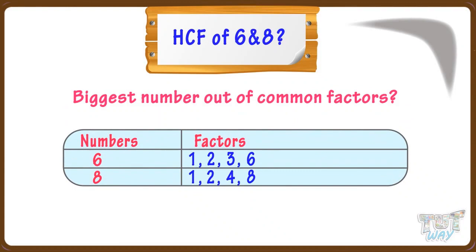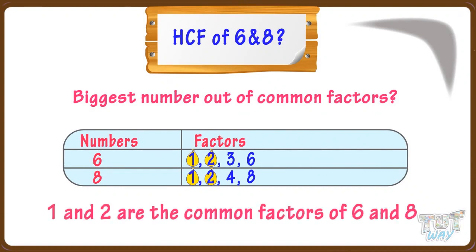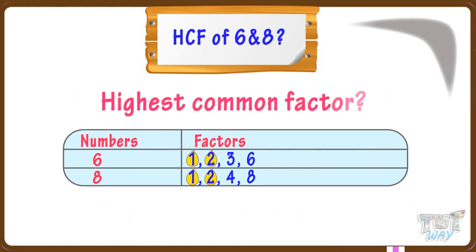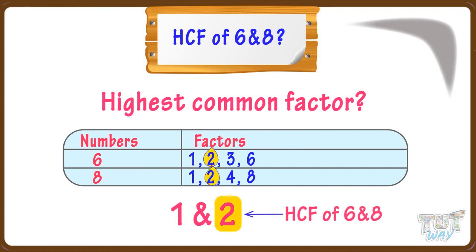Now find the biggest number out of the common factors of these two numbers. The numbers 1 and 2 are factors of both 6 and 8, so 1 and 2 are the common factors of 6 and 8. But we have to find the highest common factor. The common factors are 1 and 2, and the highest common factor is 2, as 2 is the biggest. So 2 is the HCF of 6 and 8.